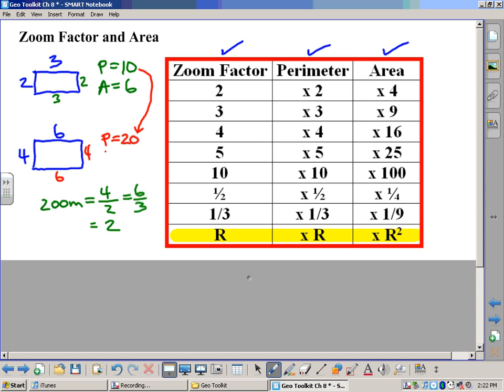Now, when we look at the area, something else happens here. Four times six would give us the area, so that would be 24. Now, six times two is not 24, but this happens to be six times four. So when the zoom factor is two, the perimeter right here, zoom factor is two, the perimeter you can multiply by two, but area you multiply by four.